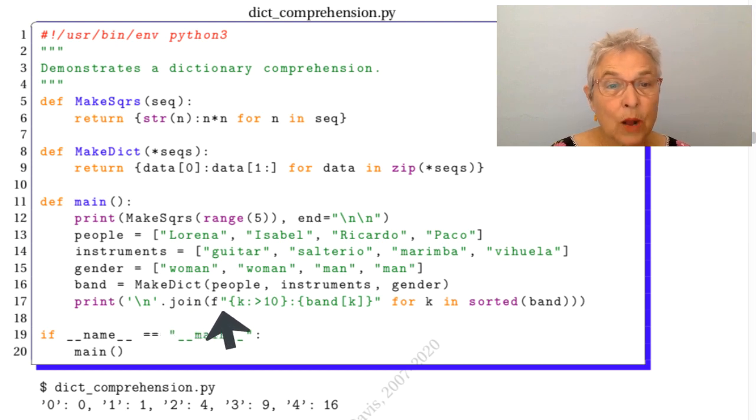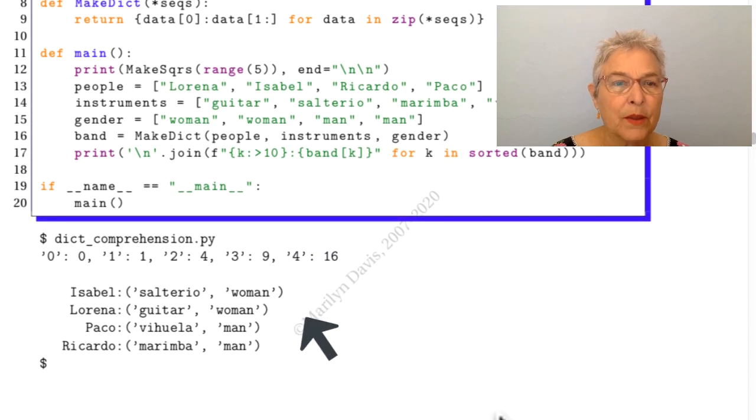And then we're going to shove them to the right in a field of 10, the name, the key, and then we'll print out the tuple. And there we see them.